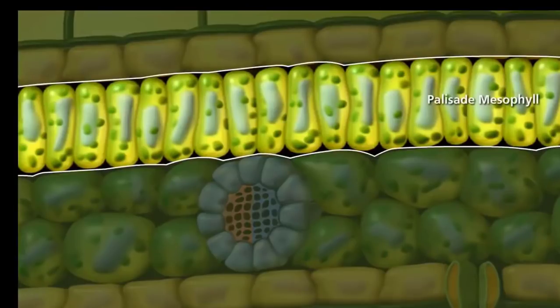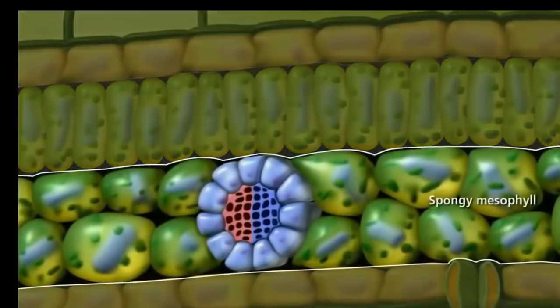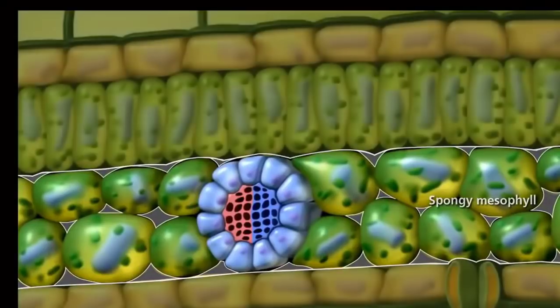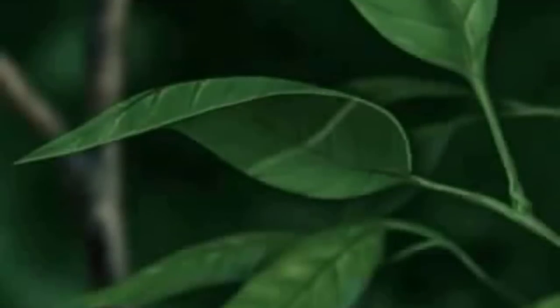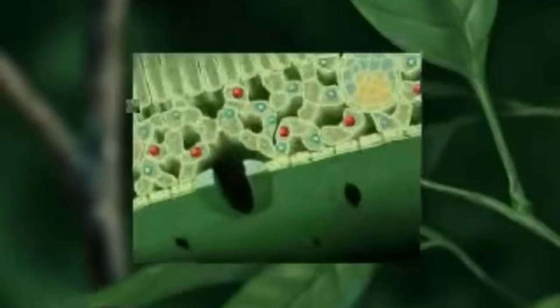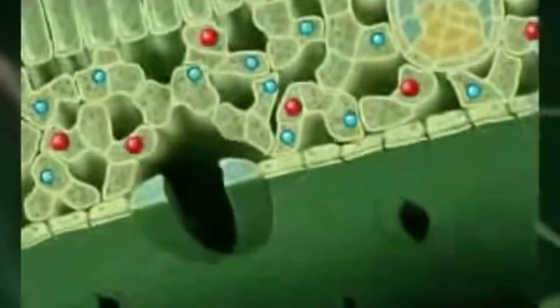Inside the mesophyll is where photosynthesis is happening. Looking inside a leaf, we can see xylem and phloem running through it like veins. When photosynthesis occurs, it produces sugars like glucose, which travel down the phloem. Photosynthesis also requires water, which travels up the xylem toward the leaves.